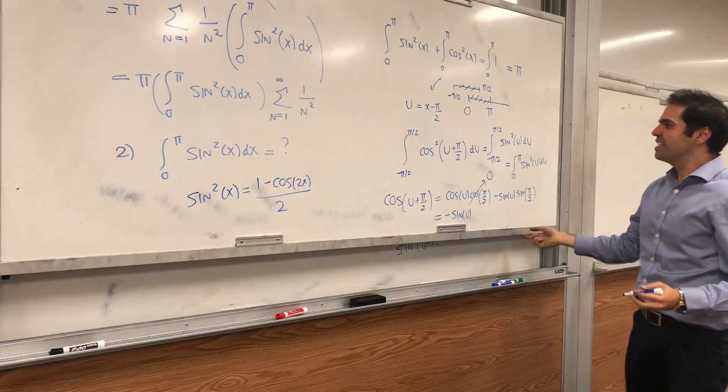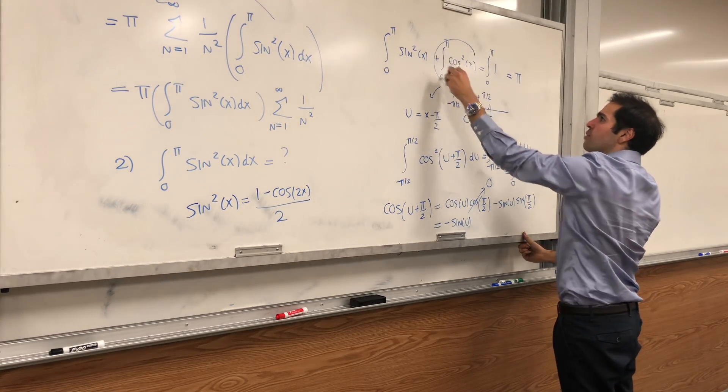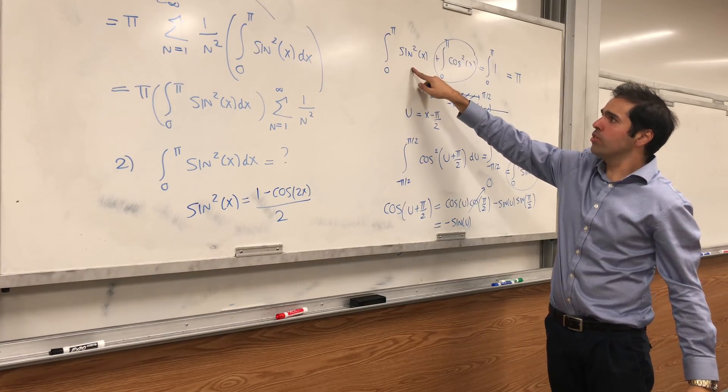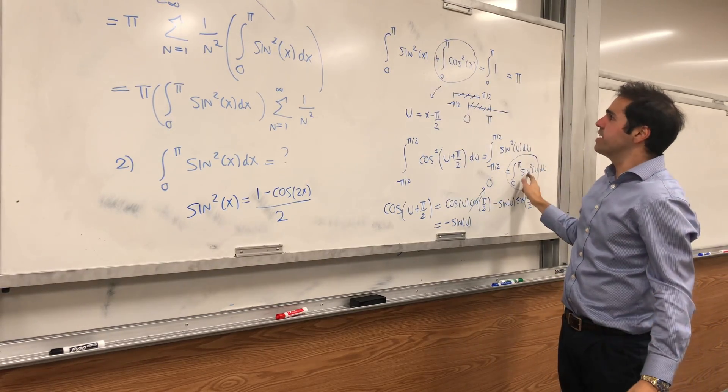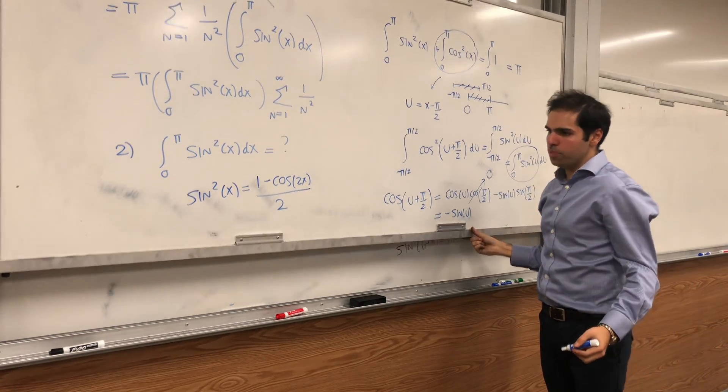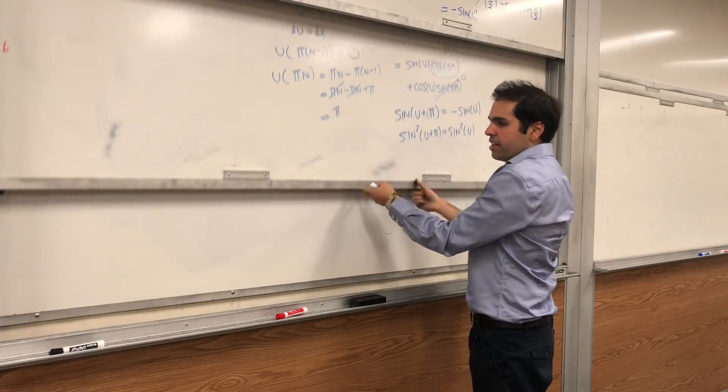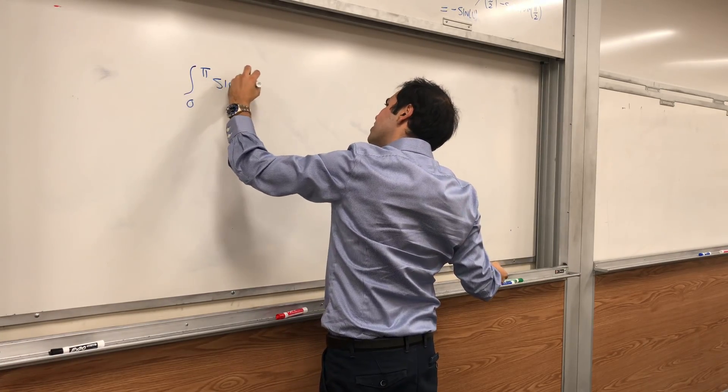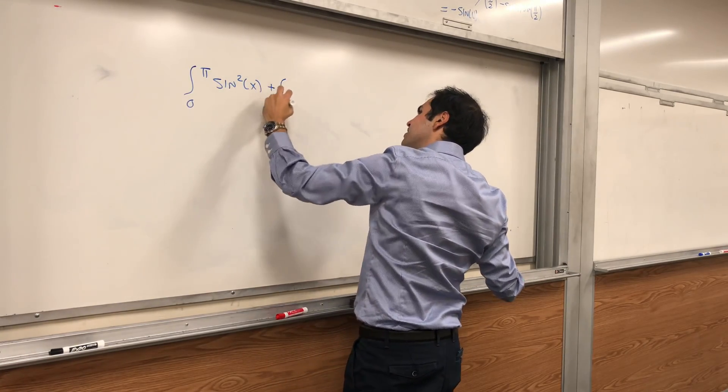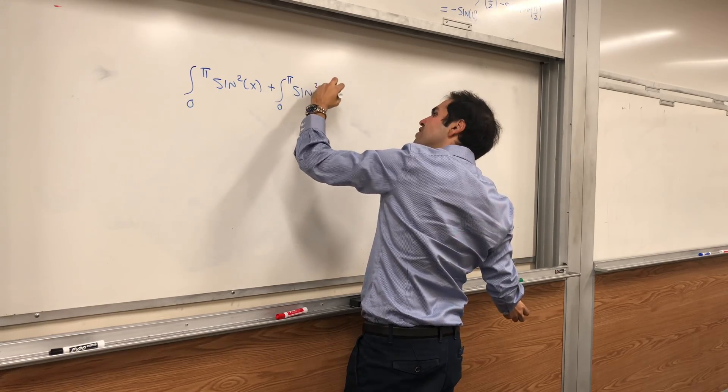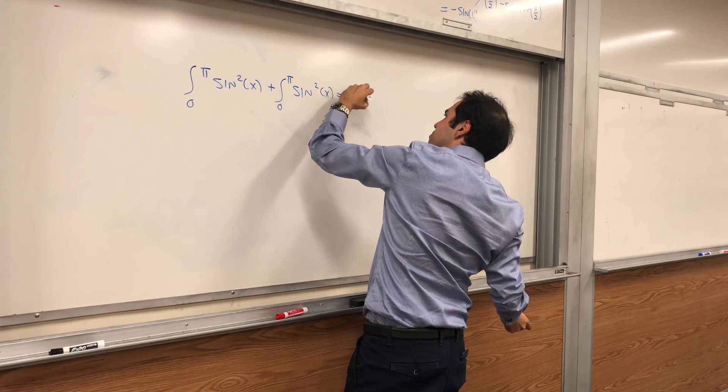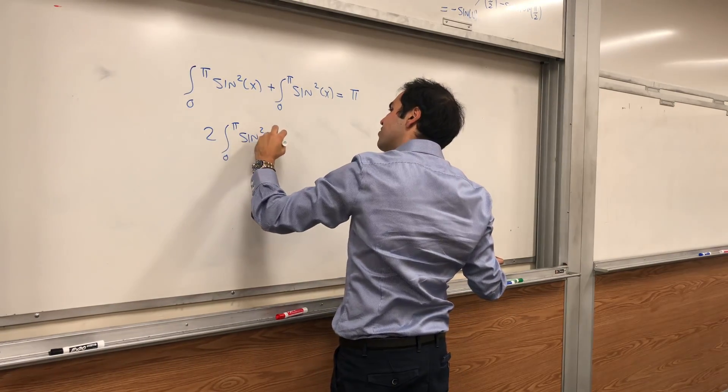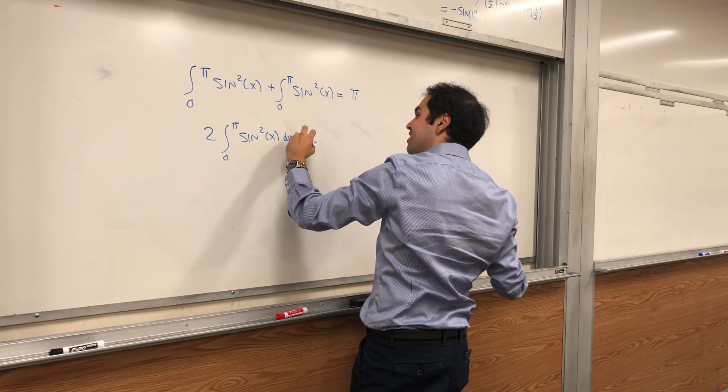So, what do we get? We get that those two integrals are indeed the same. So we just get the integral that we want plus the integral that we want equals pi. So two times the integral from 0 to pi sine squared of x dx is pi.